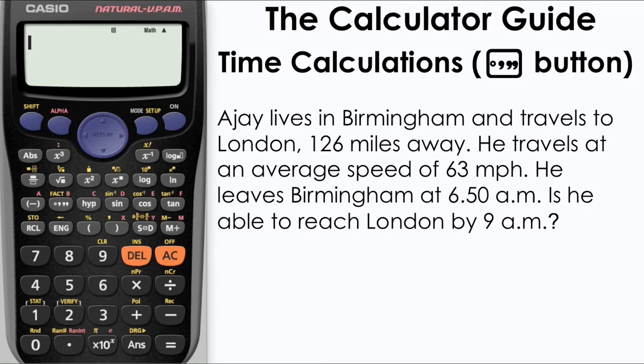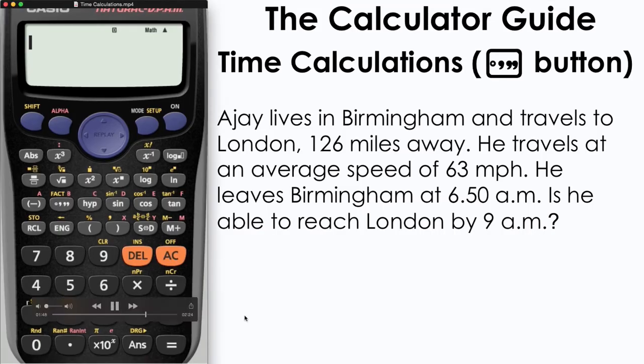The last question now. AJ lives in Birmingham and travels to London, 126 miles away. He travels at an average speed of 63 miles per hour. He leaves Birmingham at 6.50am. Is he able to reach London by 9am? We're thinking here about the difference between the two times.